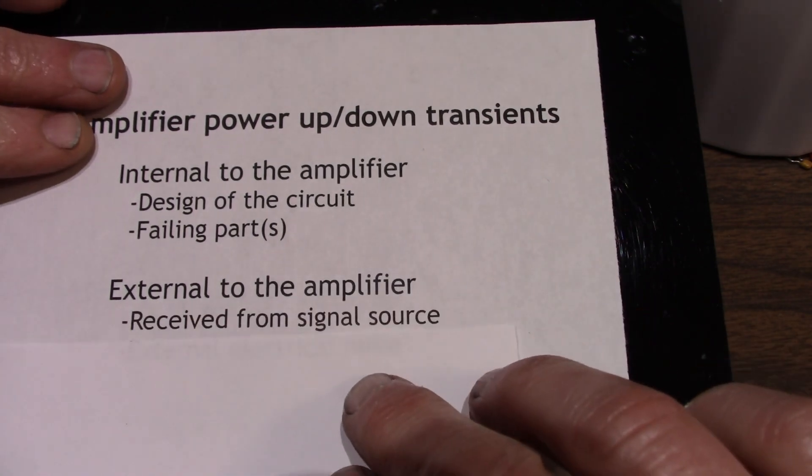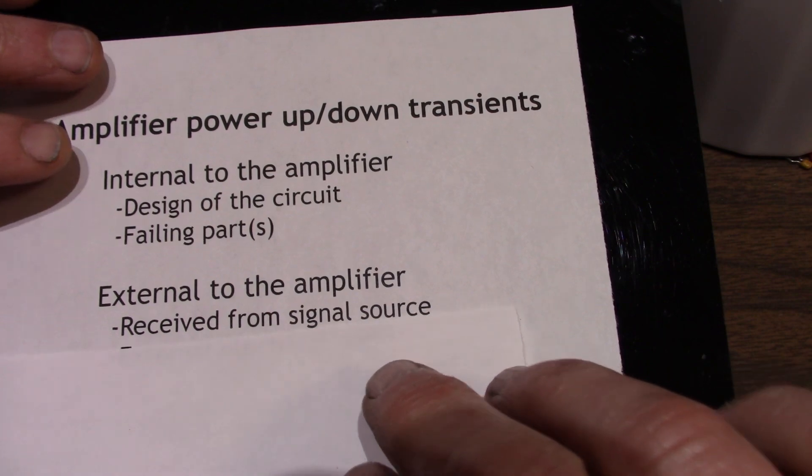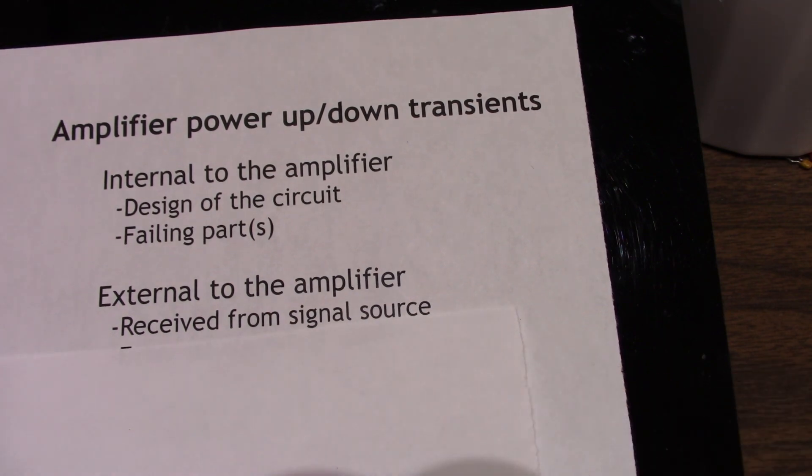So now we'll look at transients external to the amplifier. First off is received from the signal source. Of course, your amplifier is going to be connected to some type of signal source. It could be a preamp. It could be some other music source, turntable, tape deck, digital music player.